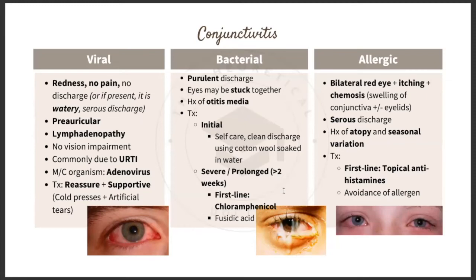Conjunctivitis can be divided into viral, bacterial, and allergic types. In viral conjunctivitis, there is redness, no pain, and no or watery/serous discharge. It affects the preauricular lymph nodes, which may be enlarged on palpation. There is no vision impairment, and it is most commonly caused by adenovirus, often associated with upper respiratory tract infection.